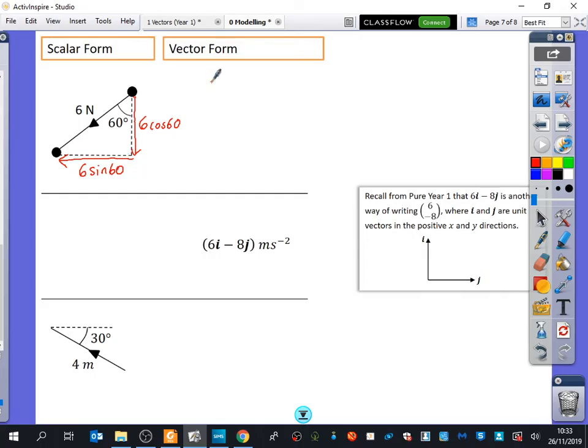So I need to put that very carefully now into vector form. What should be on the top of my column vector? Nabil, what do you think should be on the top of the column vector? 6 sine 60. 6 sine 60. Anybody disagree? Minus 6. Yeah, why should it be minus 6? Because it's going to the left, and we know that things going to the left are negative.